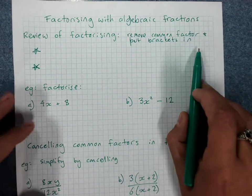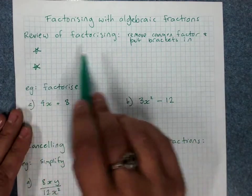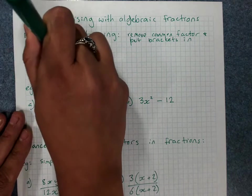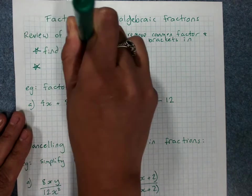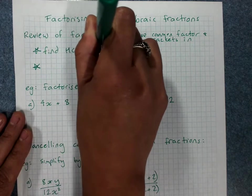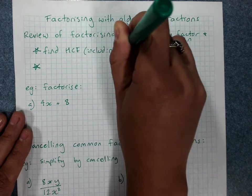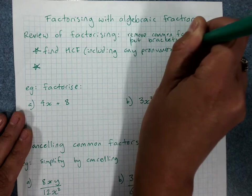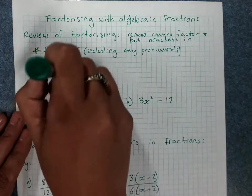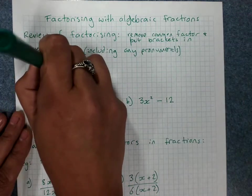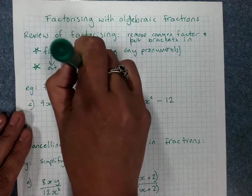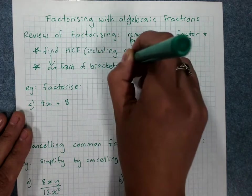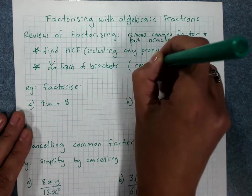So it's the opposite of expanding. So you find the highest common factor, including any letters. And it goes out the front of the brackets. And then remaining factors in the brackets.